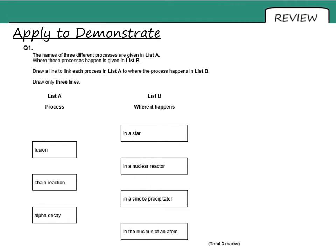So matching up the answers, fusion happens in stars. Chain reactions happen in a nuclear reactor. So that's nuclear fission. And alpha decay happens in the nucleus of an atom. I think they're trying to catch you out there. A smoke precipitator is not a smoke detector. Different kind of device.